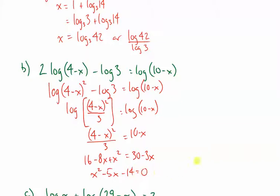I'm going to factor this. I'm running out of room here. So, I'm just going to write over here. x minus 7, x plus 2 equals 0. So, x equals 7 or negative 2.